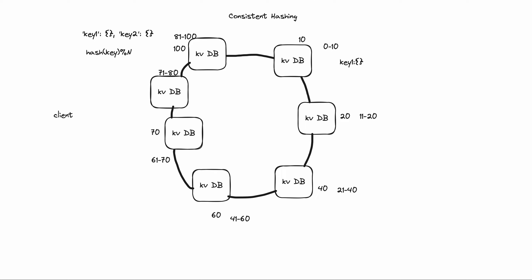How does the client know which machine has a particular key range? It uses binary search. Since the ranges go from 0 to 100, the client can binary search to find the machine that holds the target key range — for example, 11 to 20 — identify that machine, and make the request directly to it.